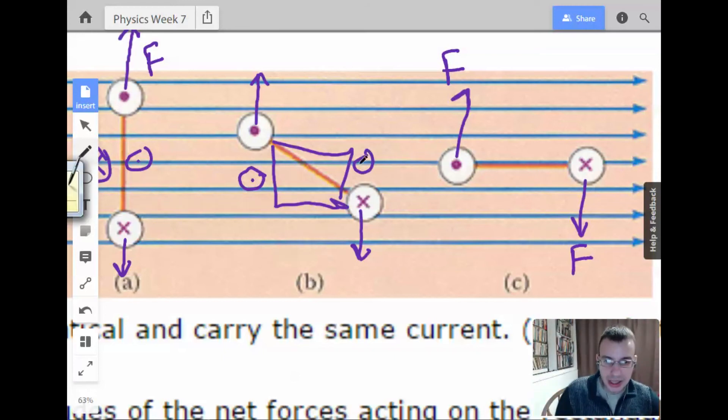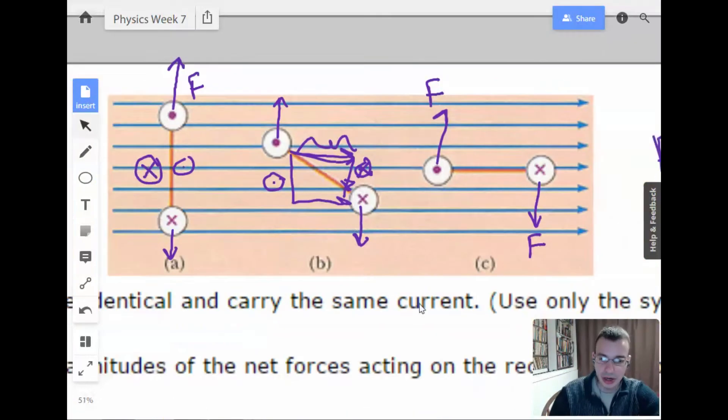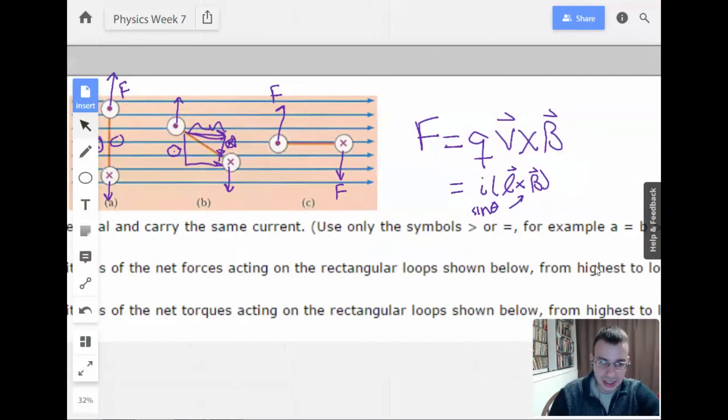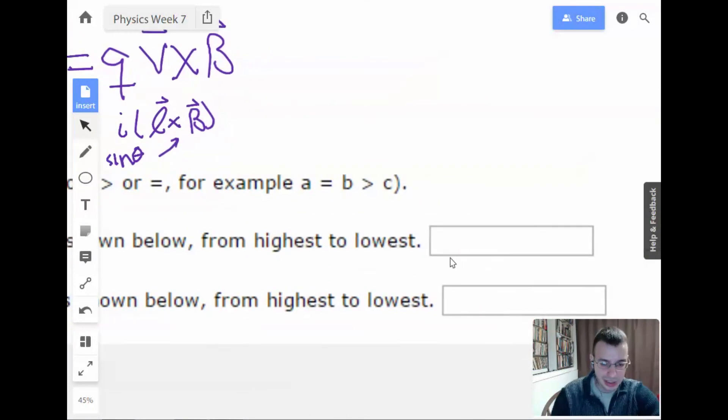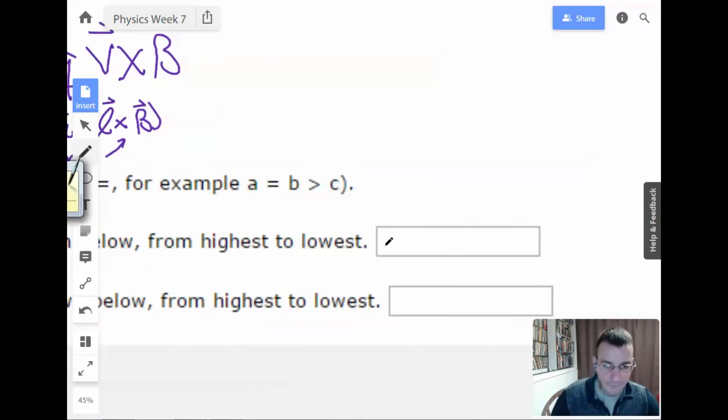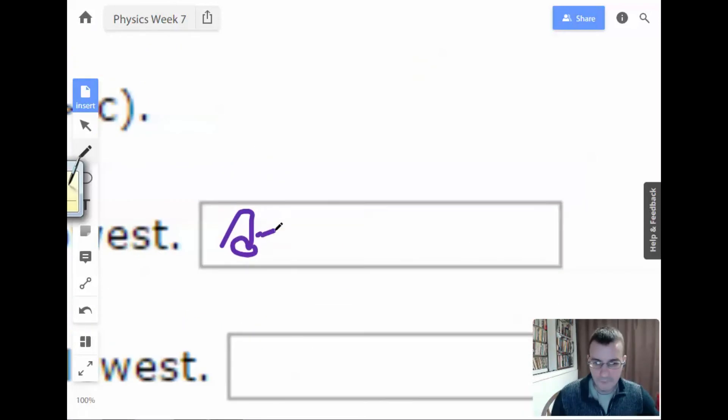What I did there was I just looked at this as a vector, as this wire is a vector, and decomposed it. And I ignored the portion right here where the angle between the wire and the magnetic field is zero. Because that's the sine of zero, which is zero. So for all these guys, I'm gonna say that A equals B equals C, which equals zero.